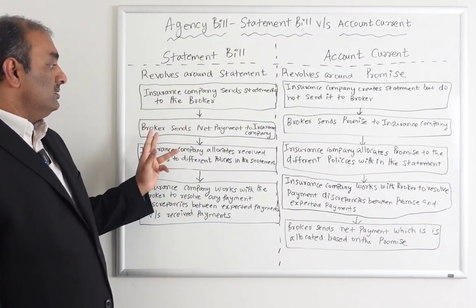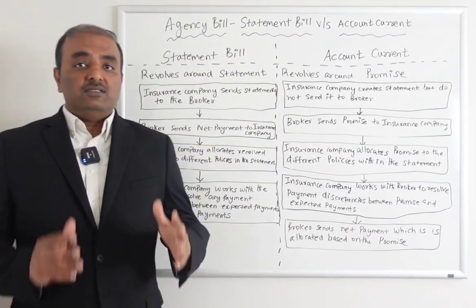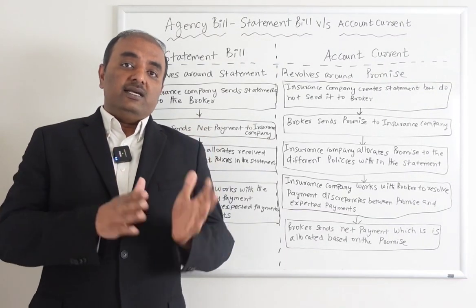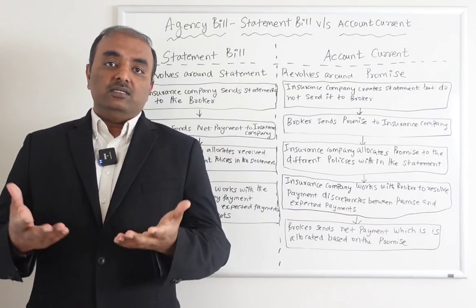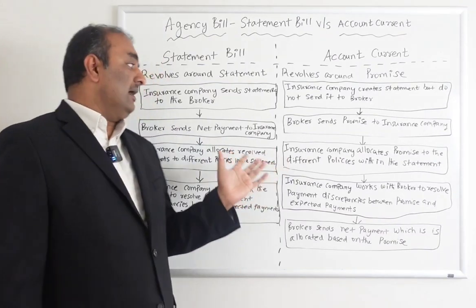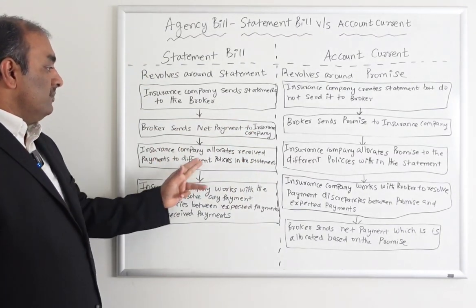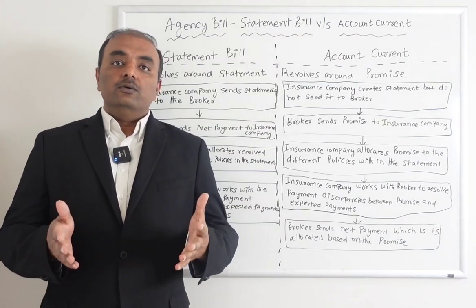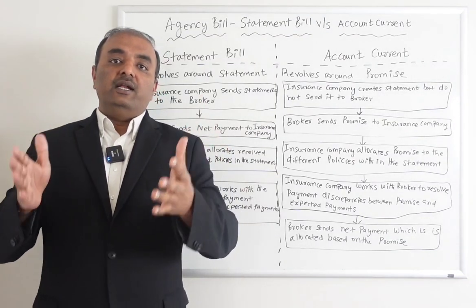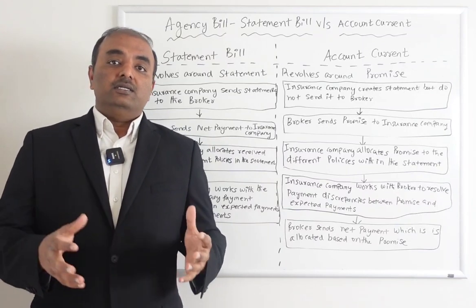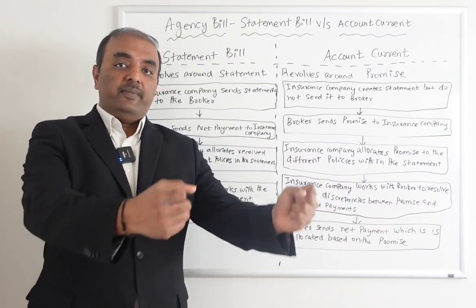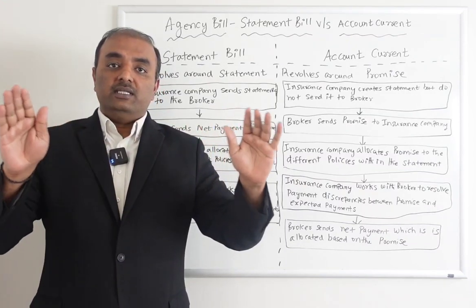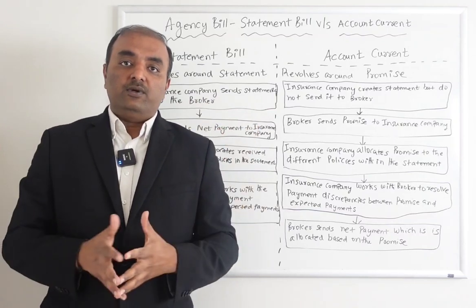The second step is that once the statement is sent, the broker sends the net payment. As discussed in our last training, net is nothing but the overall invoice amount minus the commission. The broker takes the commission — whether it's 15% or 20% — and then the remaining net payment is sent back to the insurance company. The insurance company then allocates the received payments to the different policies in the statement, either manually or through some automation process, since a broker can have 10 to 15 or more policies.